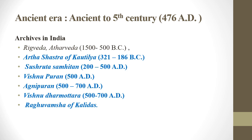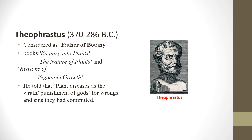Coming to the ancient era, the achievements in India include references in the Rig Veda, Atharva Veda, Arthashastra by Kautilya, Sushruta Samhita, Vishnu Purana, and Agni Purana. These ancient texts mentioned plant diseases and their management practices, indicating that plant diseases are not new — they existed from olden times.